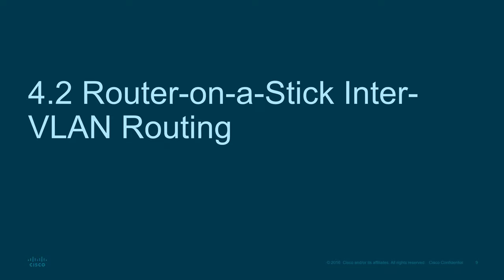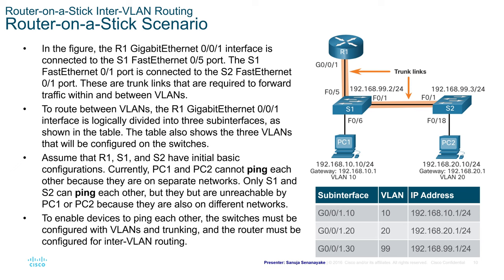In the router-on-a-stick scenario, R1's Gigabit Ethernet 0/0/1 interface is connected to S1's Fast Ethernet 0/5 port. S1's Fast Ethernet 0/1 port is connected to S2 via Fast Ethernet 0/1. These are trunk links required to forward traffic within and between VLANs. To route between VLANs, the R1 G0/0/1 interface is logically divided into three sub-interfaces as shown in the table.